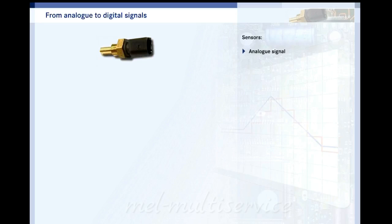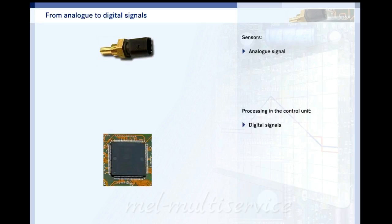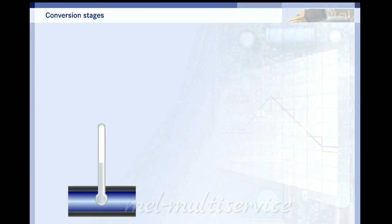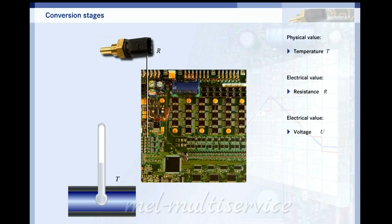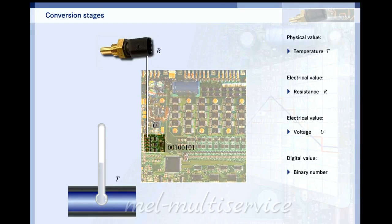At the beginning of the program you saw that many sensors supply analog signals. You also saw that the measured values are processed digitally. This section shows how analog signals are converted into digital ones. Look at the steps each signal undergoes. The coolant temperature is a physical value like most others. The NTC sensor converts the temperature to a corresponding electrical resistance. The measurement circuit generates a voltage from this. The resistance and the measurement voltage are also analog values. The measurement voltage is converted to a binary number in a special circuit called an analog to digital converter.